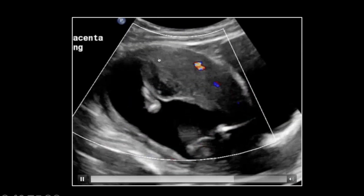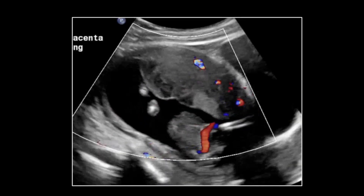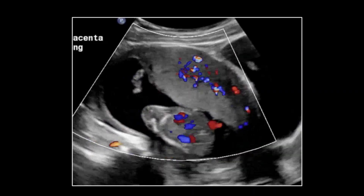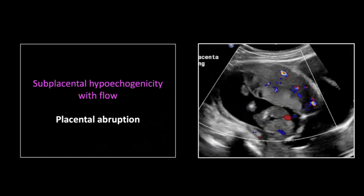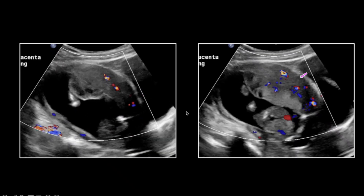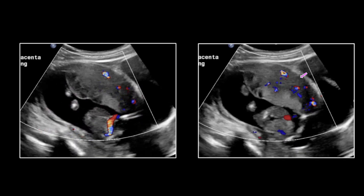Most placental abruptions involve a marginal edge of the placenta, which you can see this one does as well. The ones that are really dangerous are the central ones, because they don't present with bleeding as early and they develop really high pressure before they blow. But the vast majority of abruptions involve the margin. You pick out the thickness of the myometrium in an uninvolved area — find that thickness and echogenicity underlying the hyperechoic placenta. Placental abruption is a tough call to make, but it definitely falls to us.